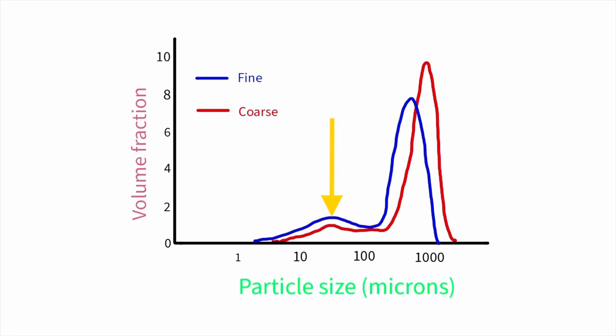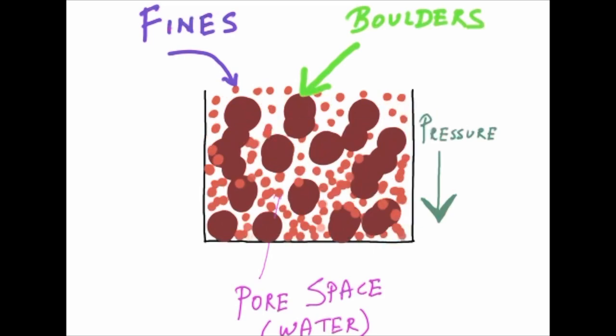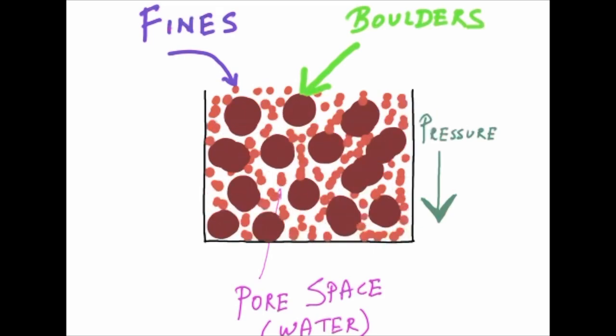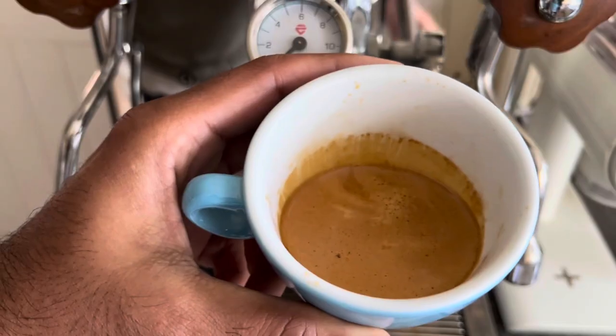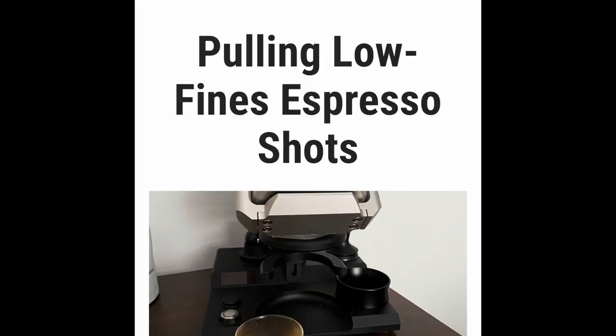Fines are what are responsible for the integrity of the puck as they migrate to the bottom of the puck and restrict the flow of water. They also extract very quickly and end up in your cup, and this is what gives us the body. For a more in-depth exploration of the effect of fines, I would recommend that you read Jonathan Gagne's blog on pulling low fines espresso shots.